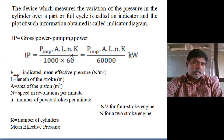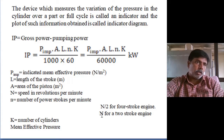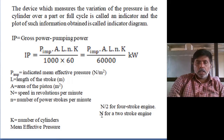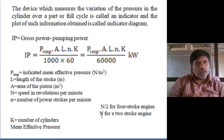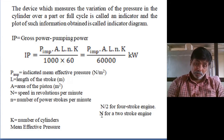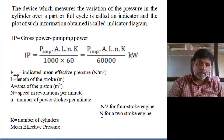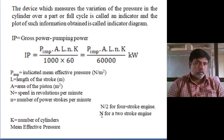Small n is not RPM — it is the number of power strokes. For a two-stroke engine, speed equals the number of power strokes — small n equals capital N — because in a two-stroke engine every revolution of the crankshaft produces one power stroke.